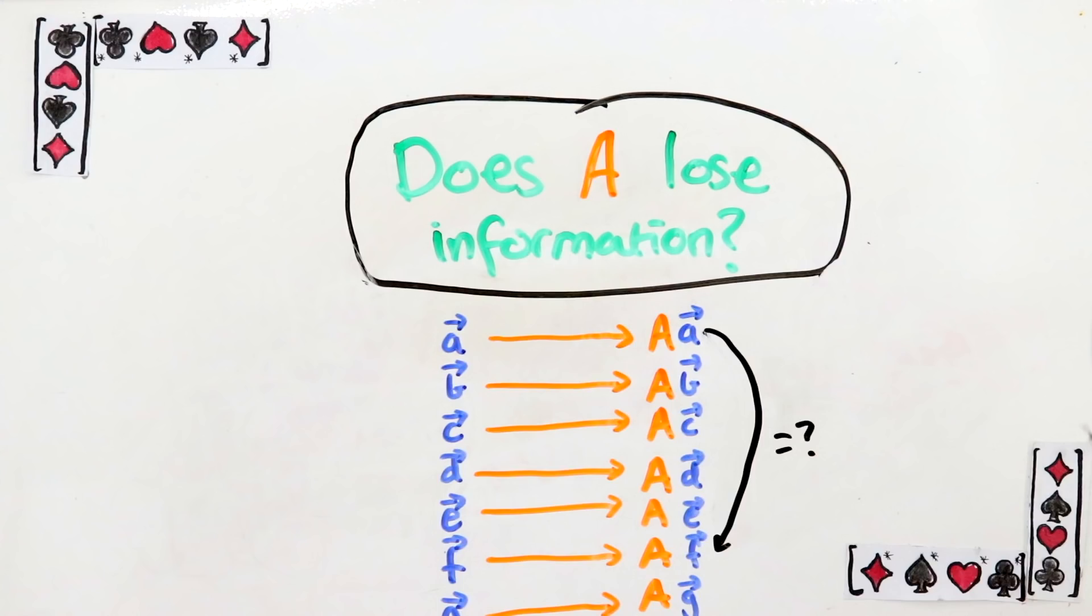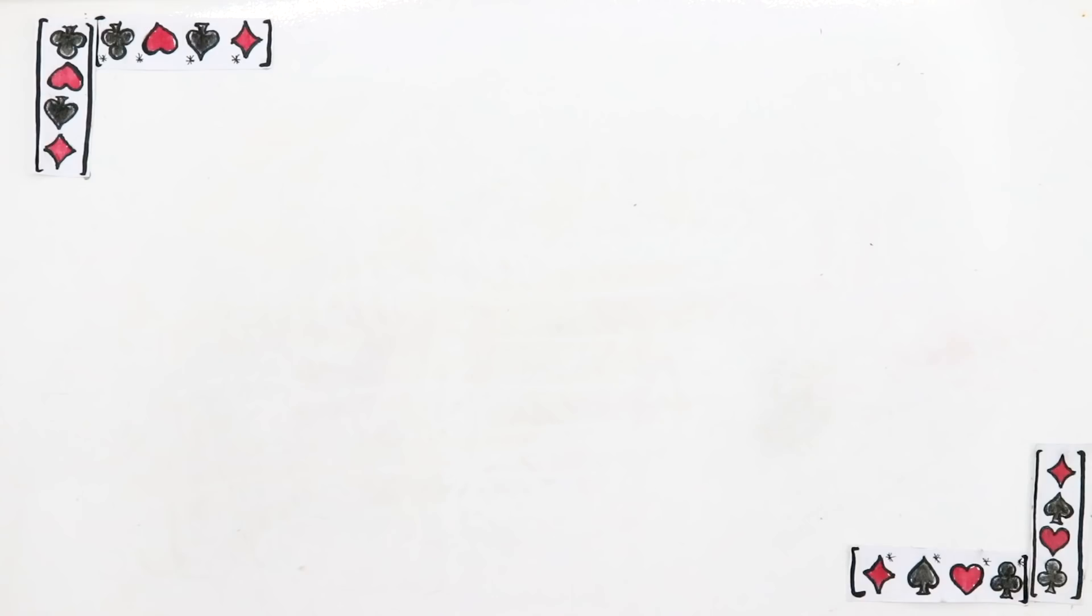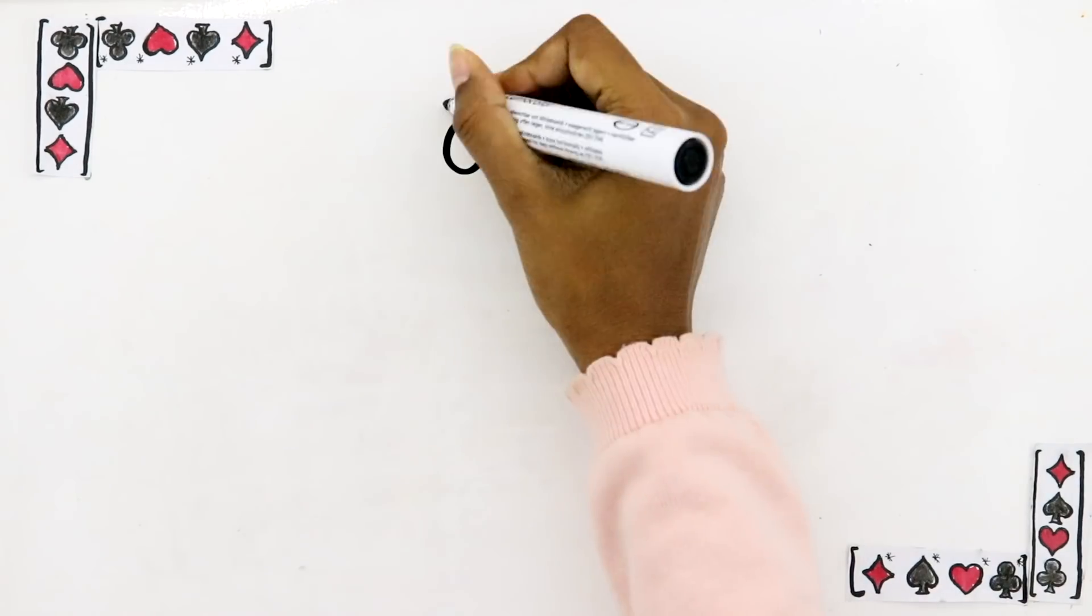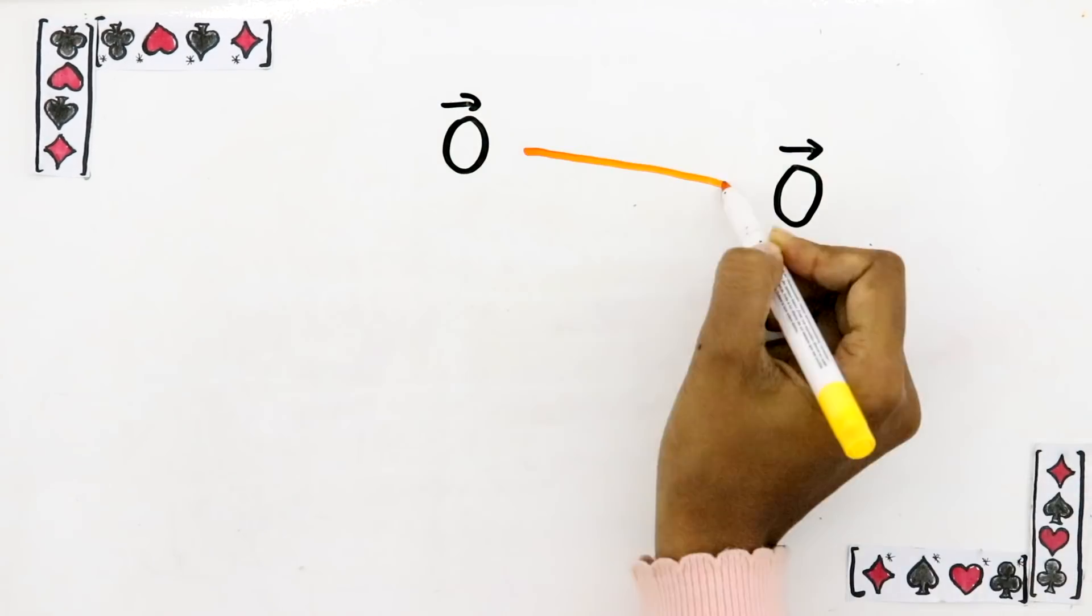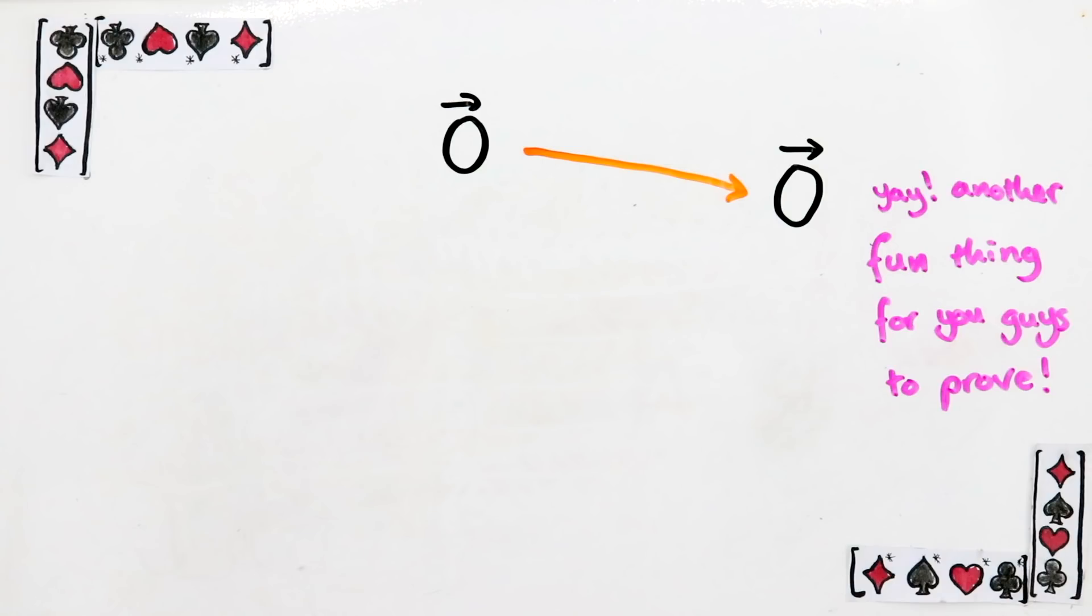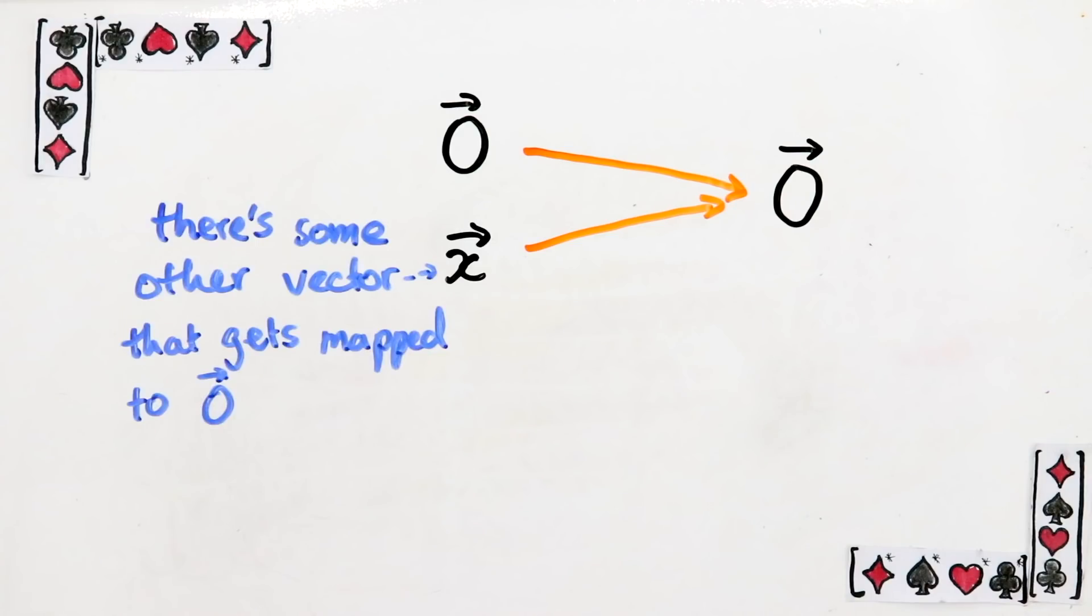Thankfully there is an easy way to check this condition. All you have to do is figure out which vectors get mapped to 0. For any linear map, 0 is always mapped to 0. But all you need to do is find out if there are any other vectors mapped to 0 or not. And that's enough to decide if M loses information.